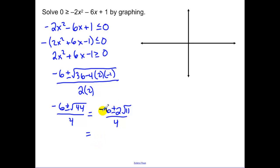Now simplifying that, I can reduce the 6, the 2, and the 4 by a 2, so we get negative 3 plus or minus root 11 over 4. Now that's hard for me to do, but what I want to do is I plug that in my calculator and I get .158 and then negative 3.158.